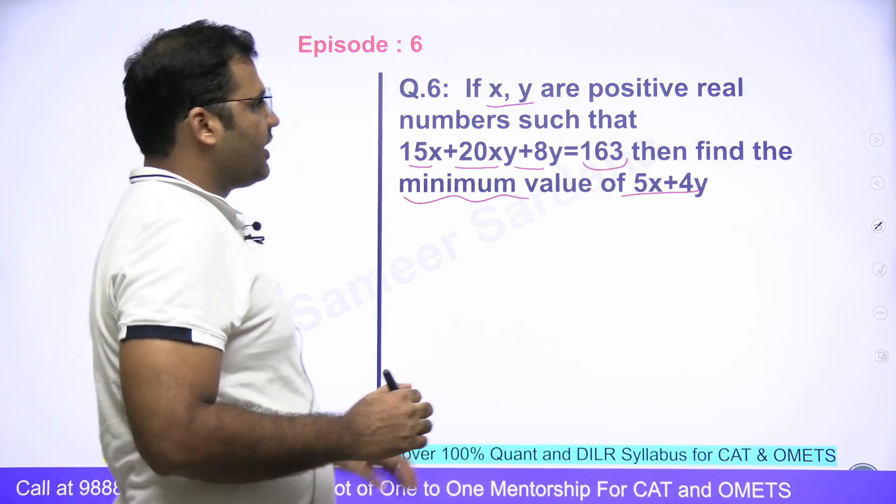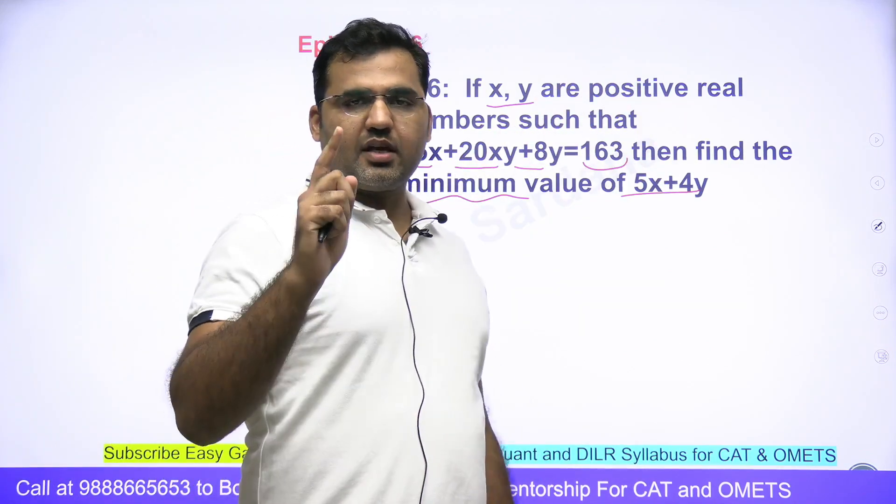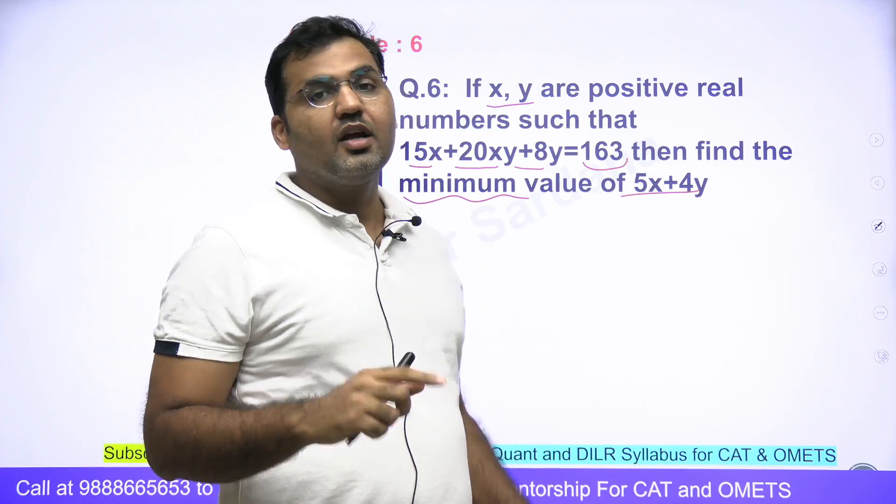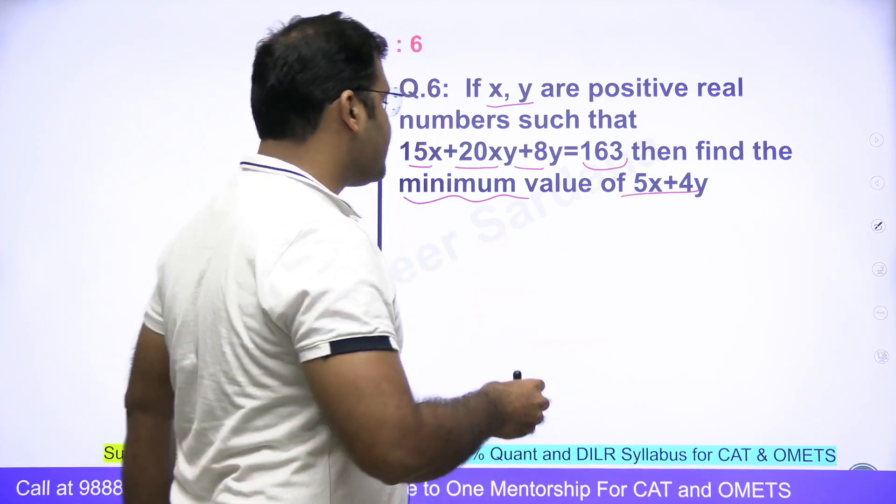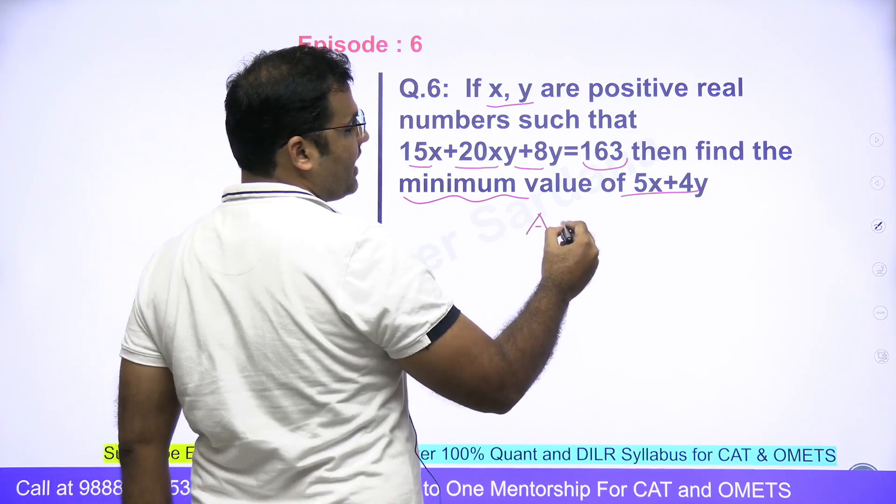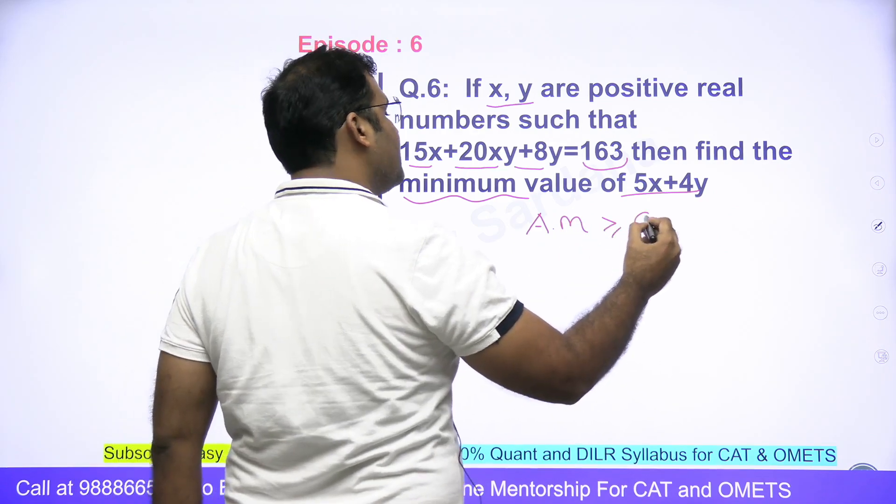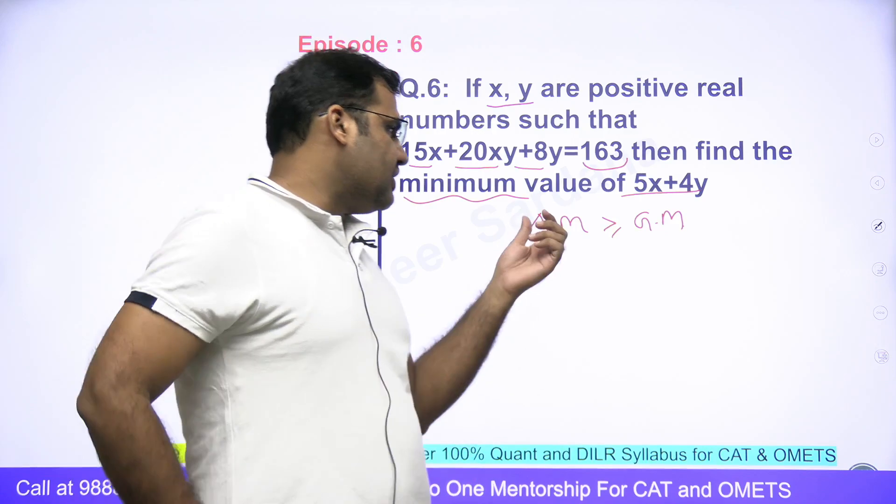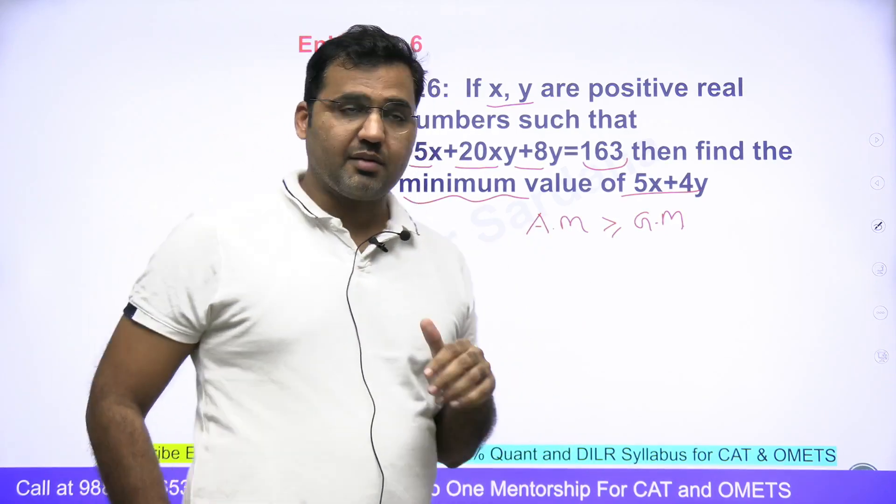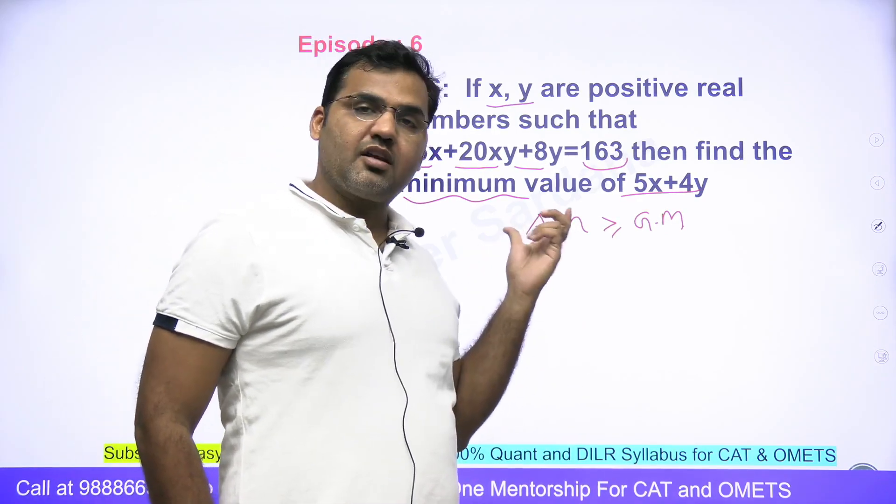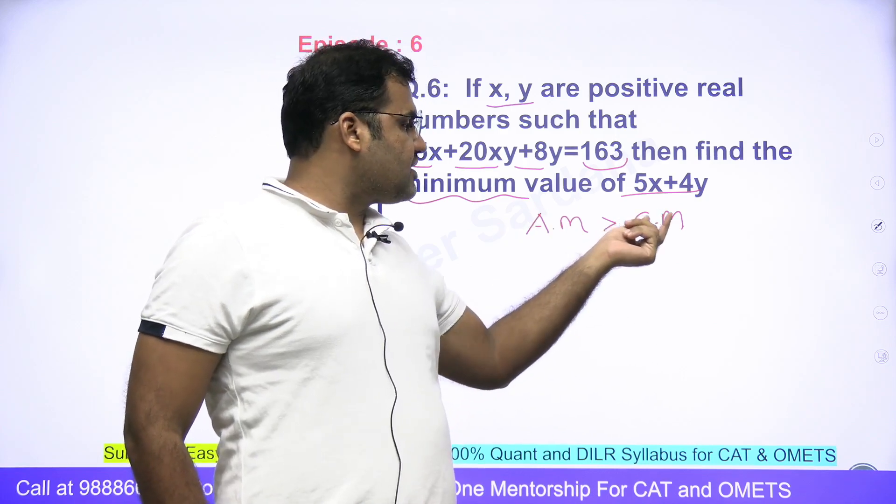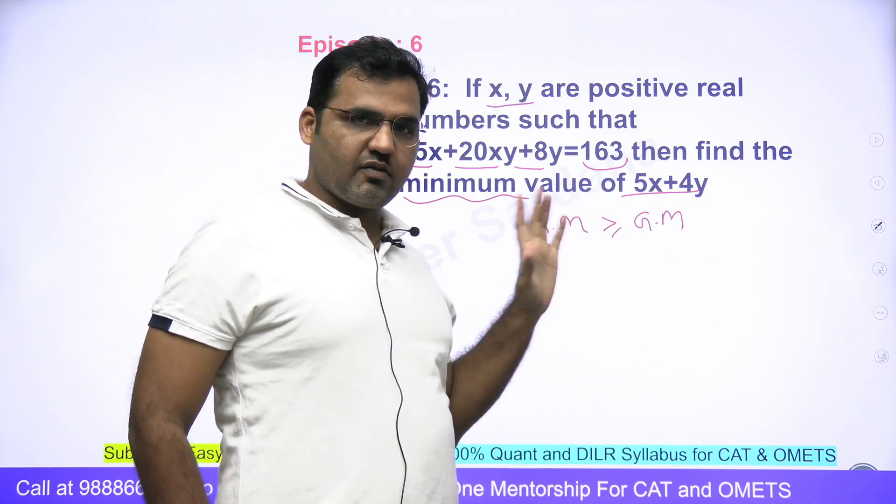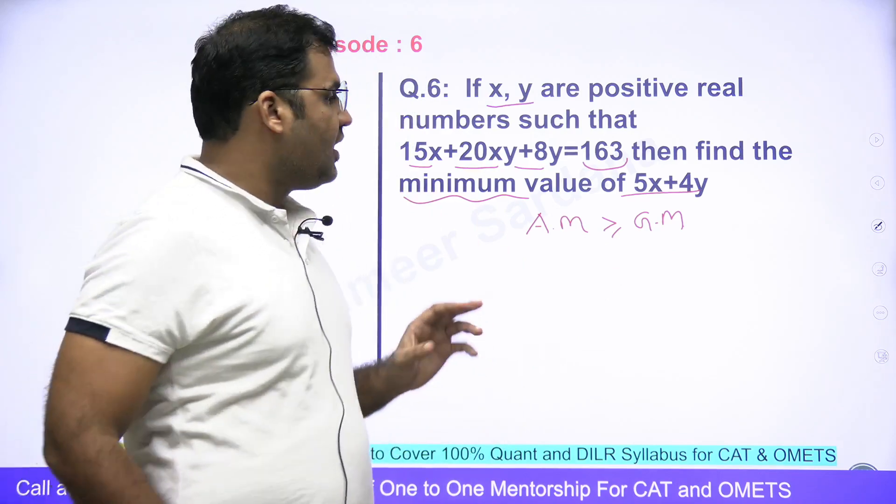First of all, x and y are positive real numbers. The moment you see this statement, you should know that for all positive real numbers, arithmetic mean will always be greater than geometric mean of the same set of positive real numbers. That's a rule that we know.